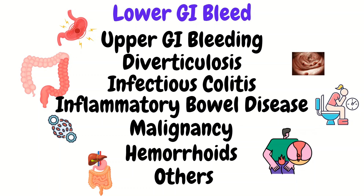Other causes of lower GI bleeding include diverticulitis, infections like colitis, IBS, cancers and malignancies, and hemorrhoids, among others.